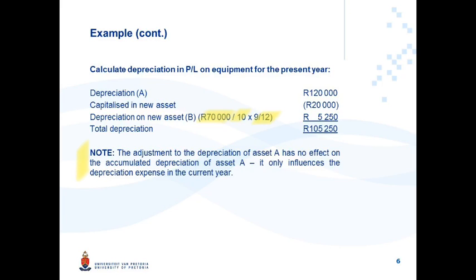It is important to note that the adjustment to the depreciation expense in profit or loss for Asset A has no effect on the accumulated depreciation of Asset A. This asset has still been used, so you still reduce its carrying amount with the full year's depreciation. The adjustment only influences the depreciation expense recognized in profit or loss for the current year.